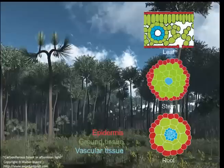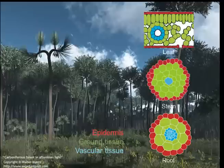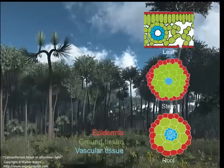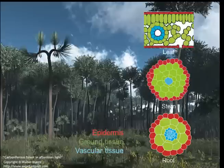Plants are all around us, and they have been all around us for hundreds of millions of years, as can be seen in this artist's rendition of North America 350 million years ago. Whether we cut through a leaf, through a stem, or through a root, we will find three different types of tissues, and they're always arranged in a very similar way. Epidermal tissues cover the plant, vascular tissues are in the center of the plant, and ground tissues are found in between these.